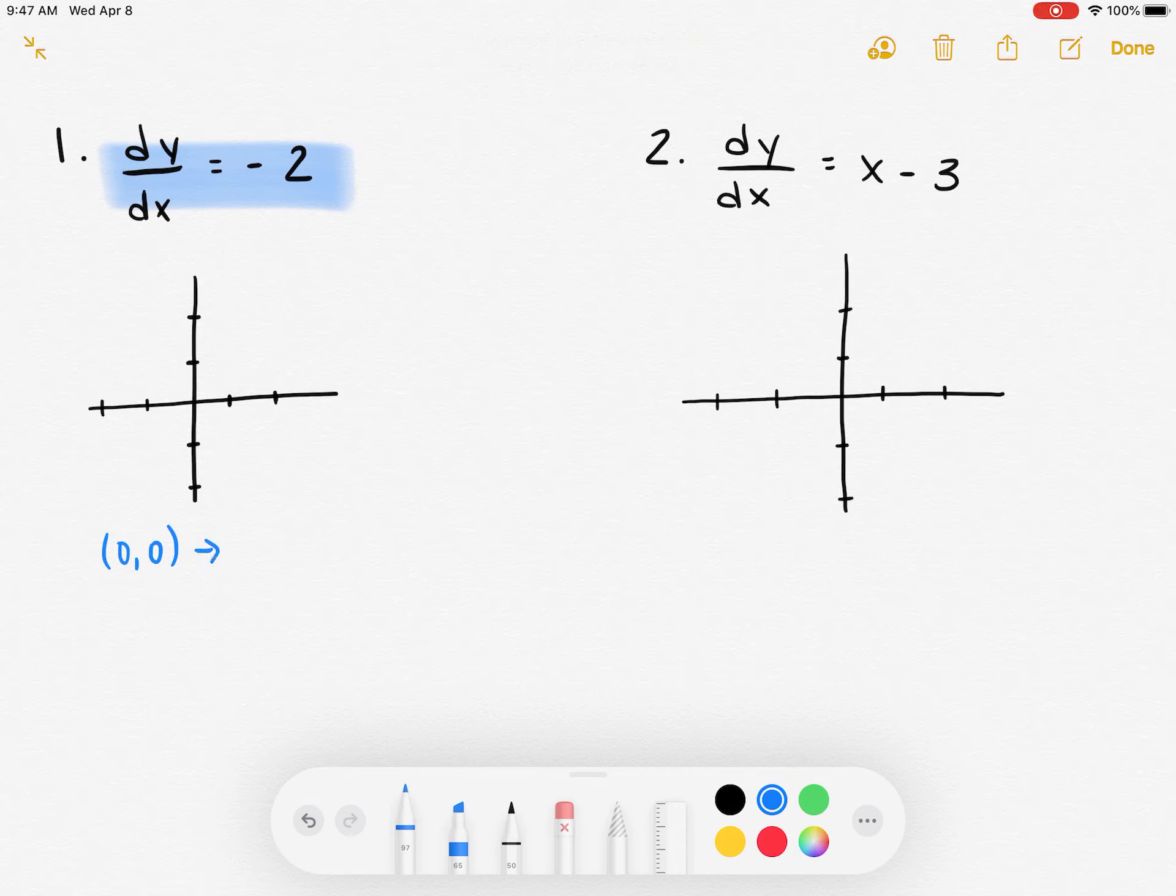I also noticed that my equation is negative 2. It doesn't have an x or a y, so there's nothing to actually plug in. So my slope is just going to be negative 2. Now a slope of negative 2 looks something like that. It's a little bit steeper than a slope of negative 1. It's going down because it's negative, and I drew it at (0,0) because that was the point that I picked to plug in.